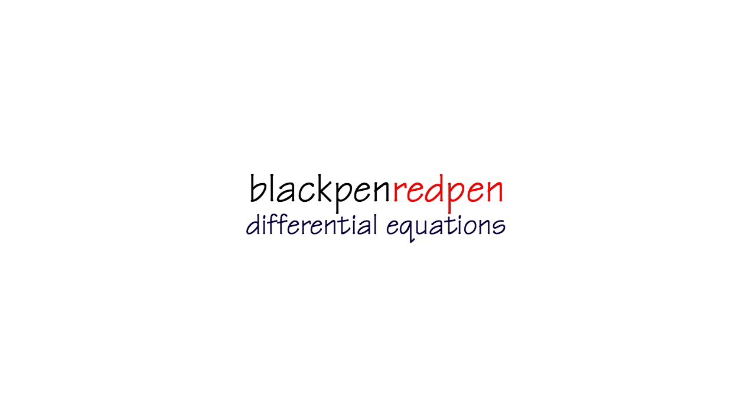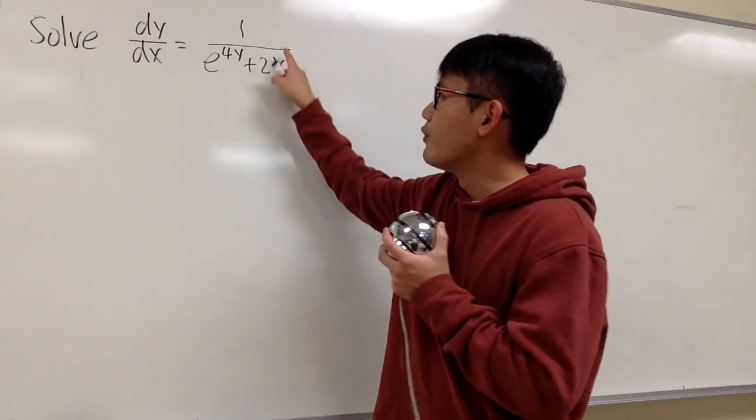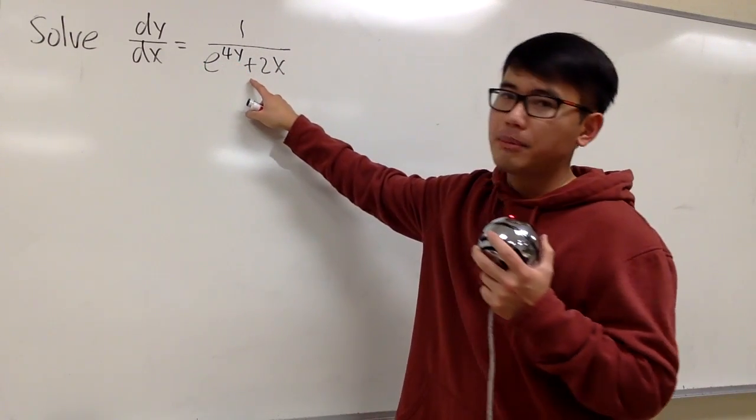Black pen, red pen, yay! Let's see how we can solve this differential equation. We have dy/dx equals 1 over e^(4y) and then we have plus 2x after that.